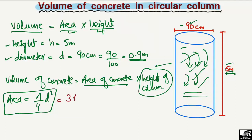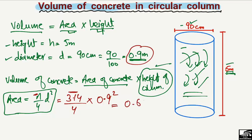Pi is 3.14, divided by 4, multiplied by d squared, where d is the diameter. The diameter of the circular column is 0.9 meters. So: Area = 3.14 / 4 × (0.9)² = 0.636 square meters. This is the area of the circular column in square meters.